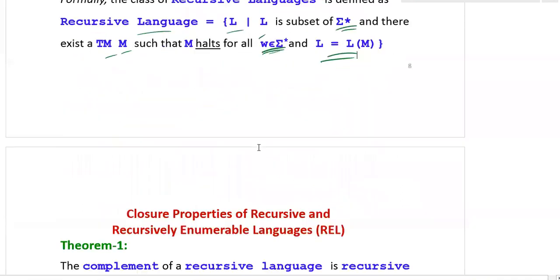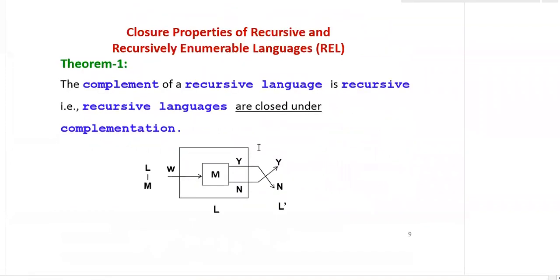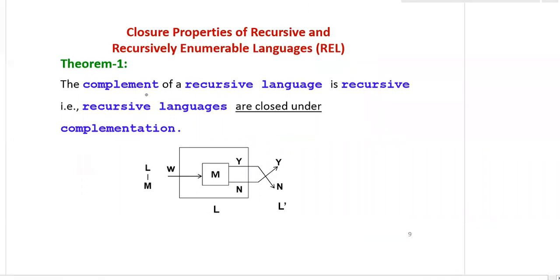Now coming to the closure properties of recursive and recursively enumerable languages. All properties are stated in the form of theorems. Theorem 1: The complement of a recursive language is recursive — that is, recursive languages are closed under complementation. This is a property of recursive language.